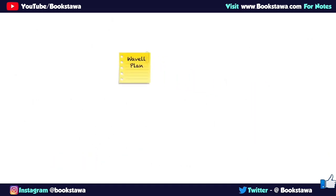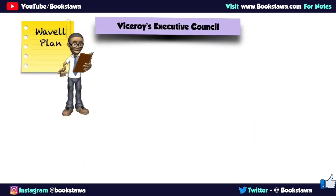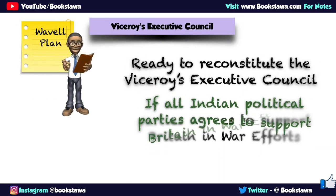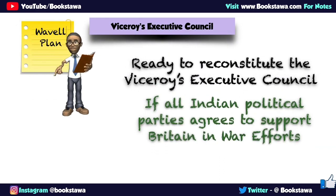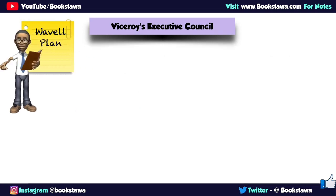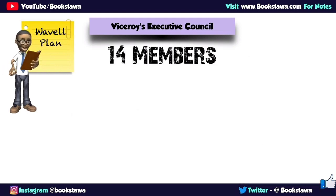In the Wavell Plan, Lord Wavell had proposed to reconstitute the Viceroy's Executive Council if all Indian political parties were ready to give their support to the British government in World War II. The Viceroy's Executive Council would be reconstituted and its number of members would be increased to 14.